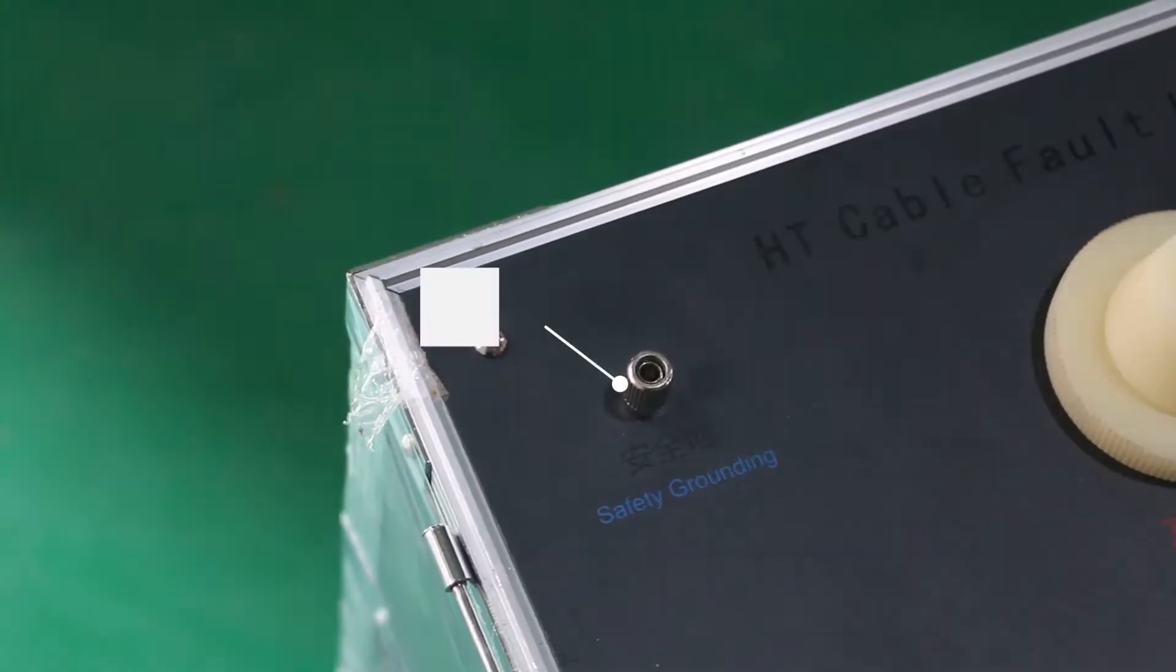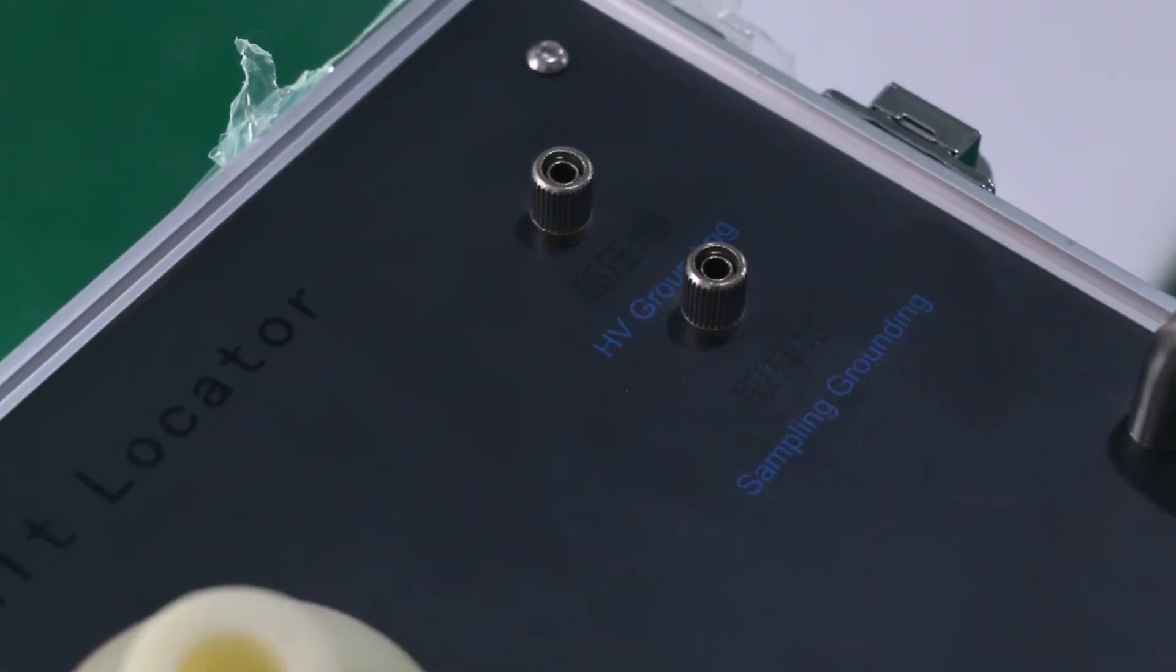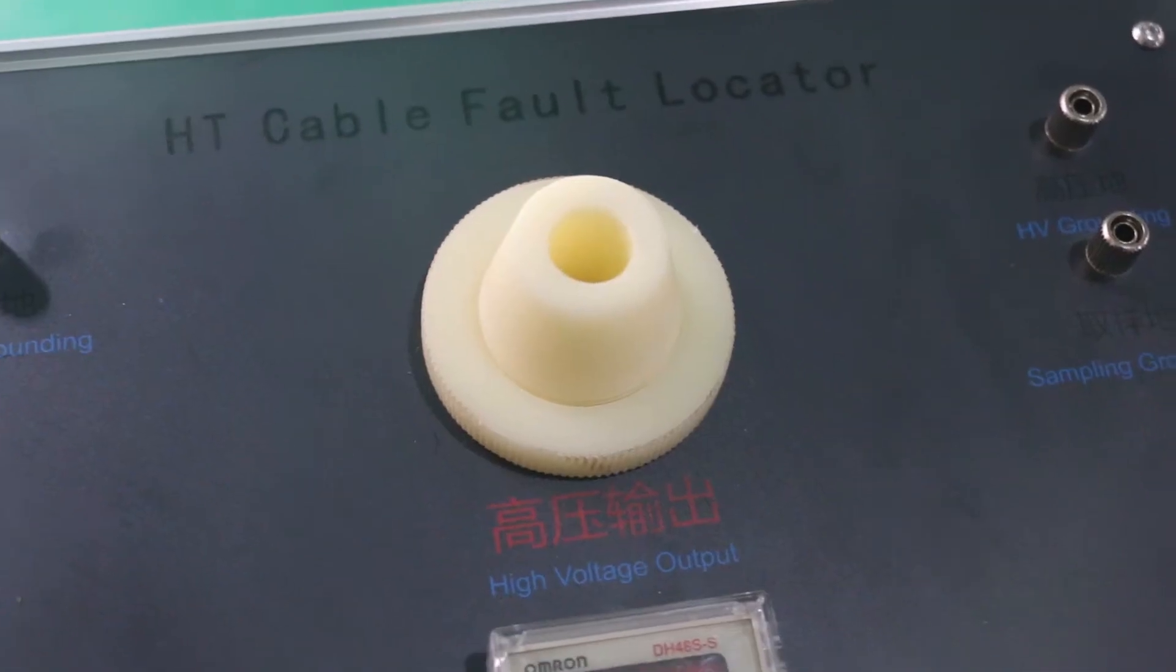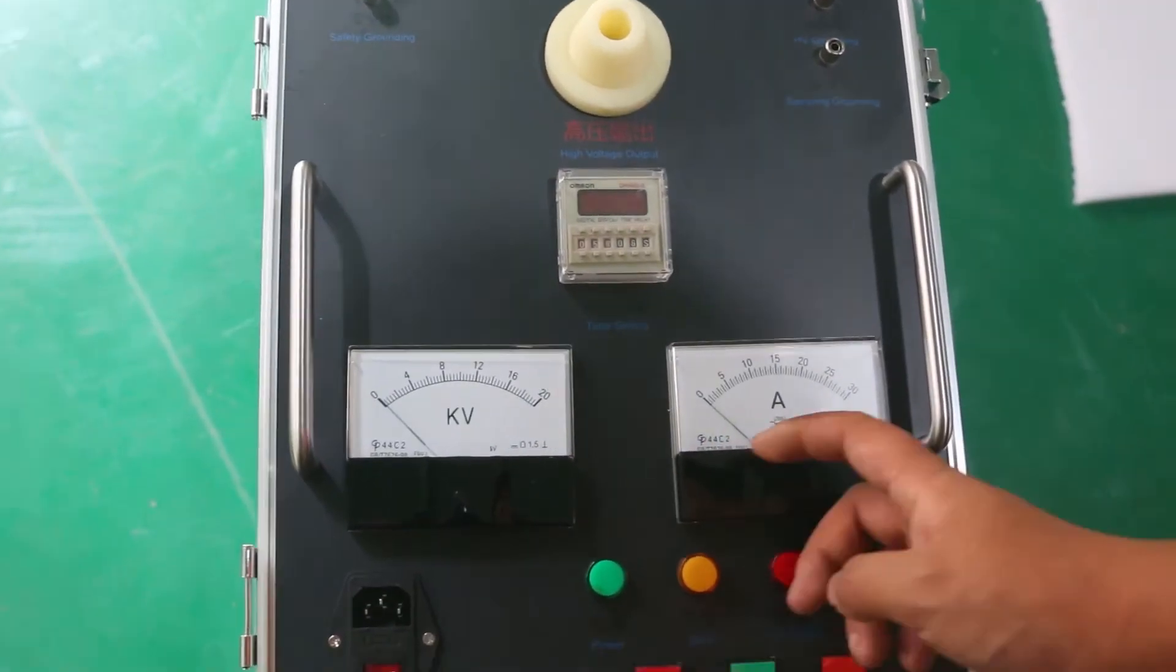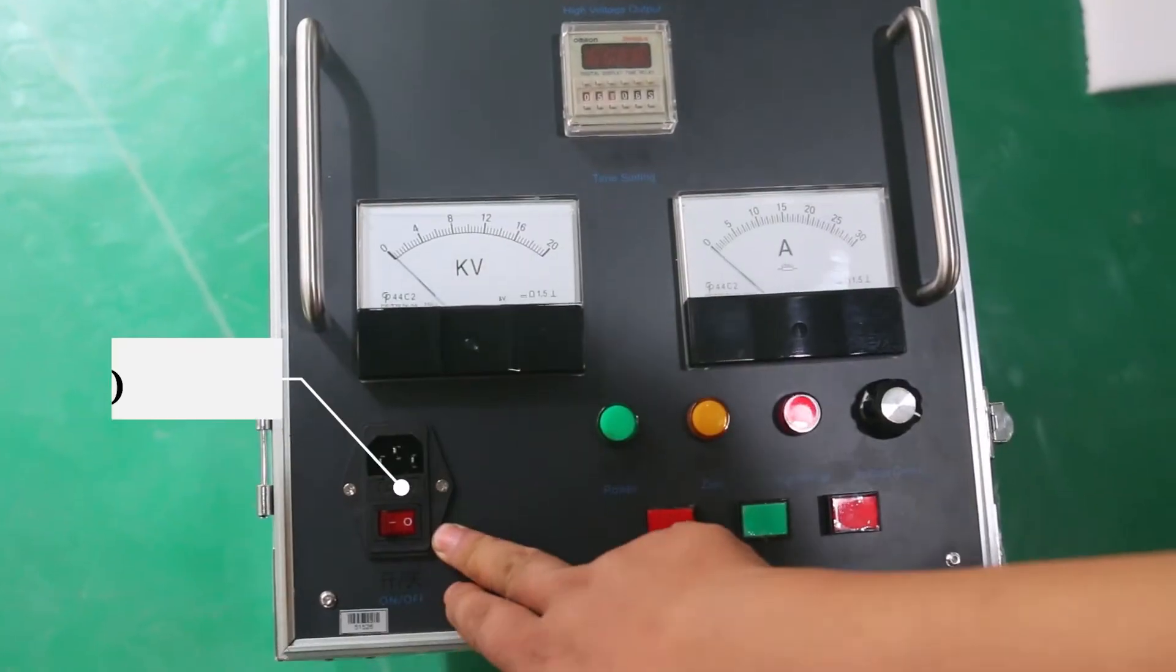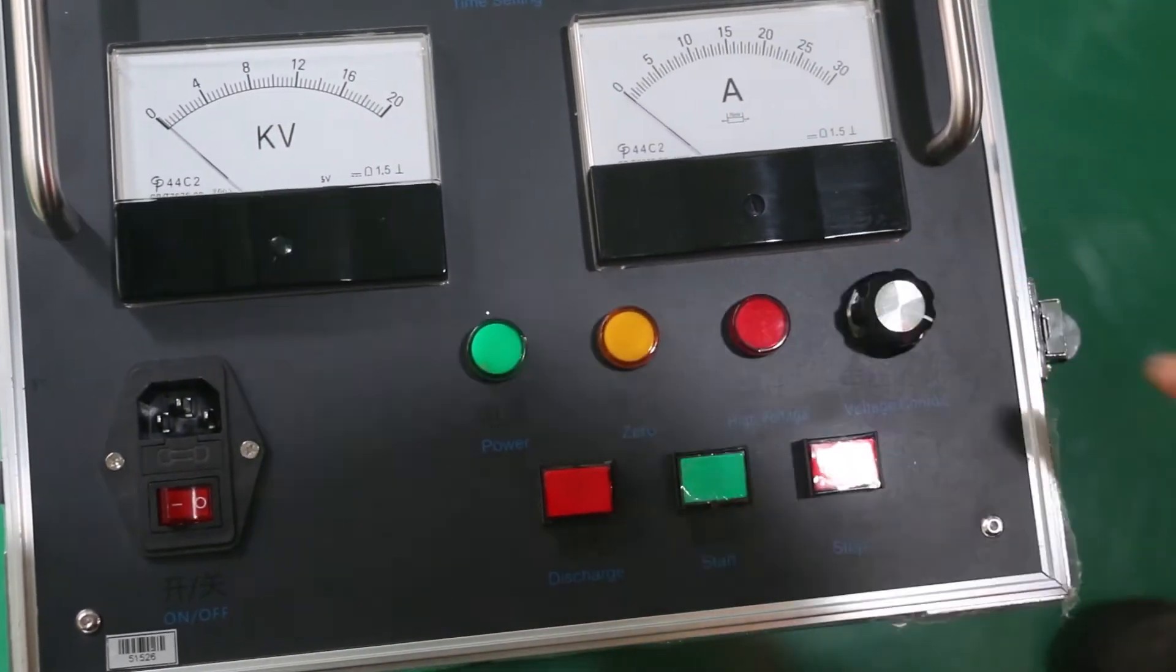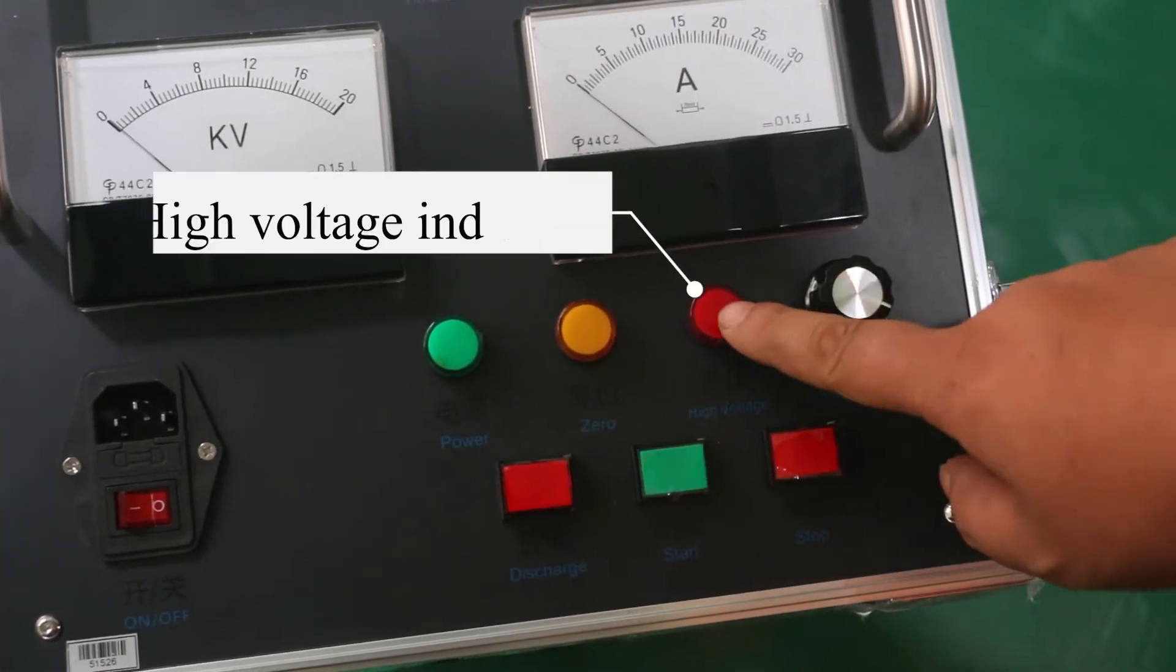Interface introduction: The control panel features safety ground, high-voltage ground, sampling ground, high-voltage output, time setting, voltmeter, ampere meter, on-off switch, power indicator, zero indicator, and high-voltage indicator.